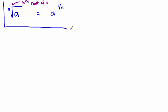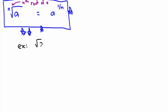This is a really important rule that causes a lot of students problems. For example, the square root of 2 has a stealth 2, so by the rule — the nth root of a equals a to the power of 1 over n — the square root of 2 is the same thing as 2 to the power of 1 over 2.